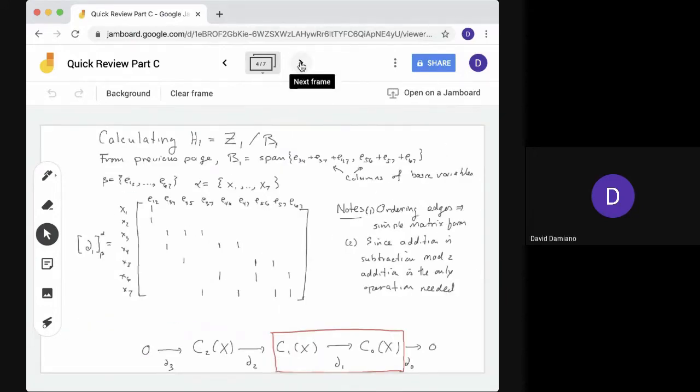Here we're going to calculate H1, Z1 mod B1. From the previous page, we know B1, the boundary is the span of E34 plus E37 plus E47 and E56 plus E57 plus E67. These are just the boundaries of the two simplices. And they're the columns of the basic variables in the matrix for boundary 2. Okay. Now we want to create the matrix for boundary 1. We're going to use the basis alpha and beta we had before. Notice here, the edges index the columns, the vertices index the rows. So if we look at the entries, for example, if we look at E1, 2 in the upper left-hand corner, its boundary is the pair of vertices X1, X2, and we see that two 1s in the first column, zeros everywhere else. And similarly, if you look at the rest of the matrix, each column has two entries in it, endpoints and the vertex. The endpoints are vertices of the edge which indexes the column.